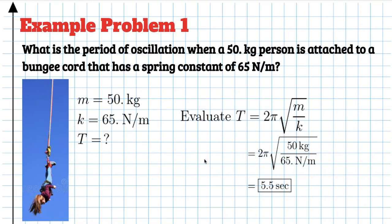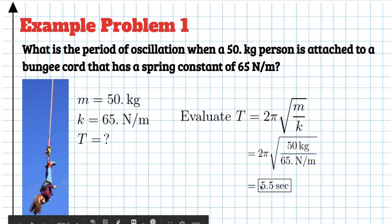If this person were heavier, the mass would be bigger and their period would actually be bigger — they would take longer to bop up and down.